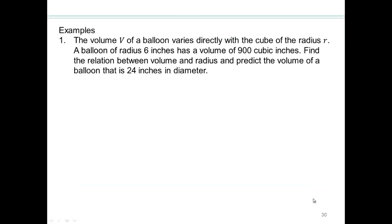Let's take some examples of that. So volume of a balloon varies directly with the cube of the radius r. A balloon of radius 6 inches has a volume of 900 cubic inches. Find the relationship between volume and radius.